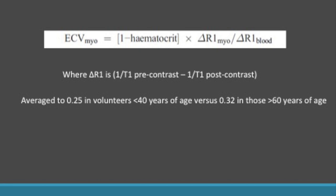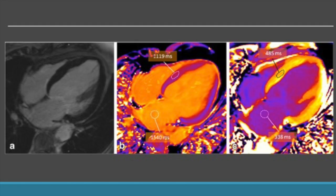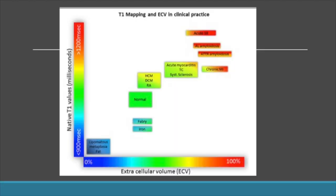We need to know the normal values of ECV. It is on average 0.25 in volunteers less than 40 years and 0.32 in those more than 60 years of age. To obtain the T1 value, all you need to do is place an ROI in the myocardium on a native T1 map. To obtain extracellular volume, you need to place ROIs on the septum as well as the blood pool in both the native T1 and post-contrast T1 maps, then enter those values into the equation to obtain the extracellular volume for that patient.